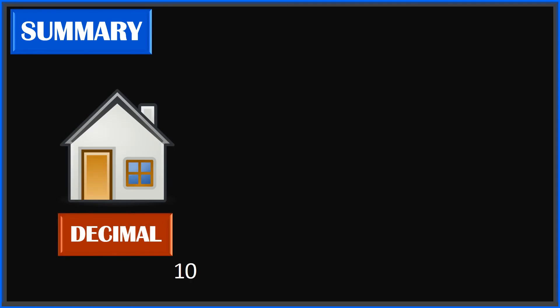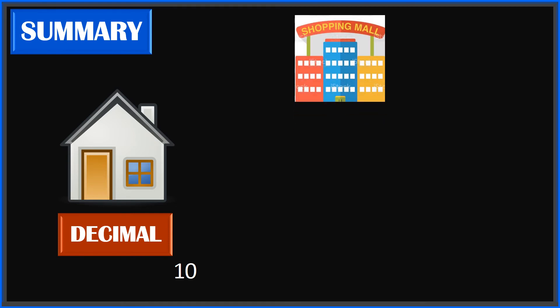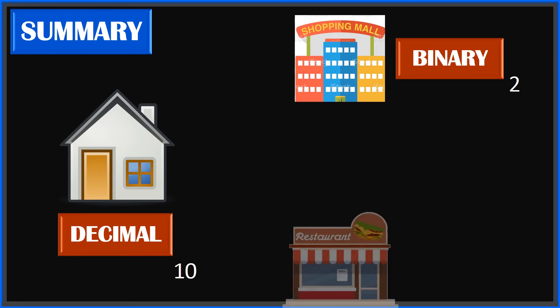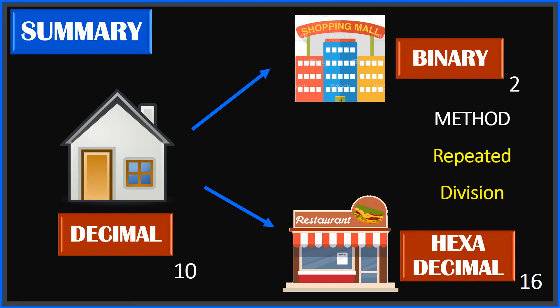Remember this. For example, consider your house as the decimal number system of base 10, which we use from childhood. A shopping mall represents the binary number system of base 2. A restaurant represents the hexadecimal number system of base 16. When going from decimal to binary or hexa — from house to mall or restaurant — we use repeated division: divide by 2 for binary, divide by 16 for hexa.